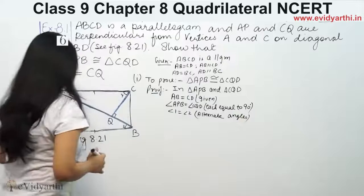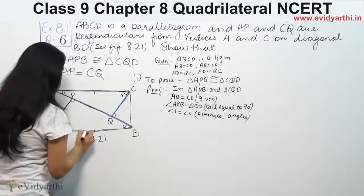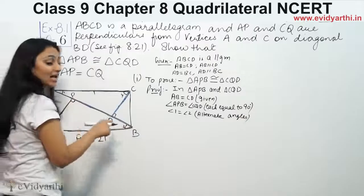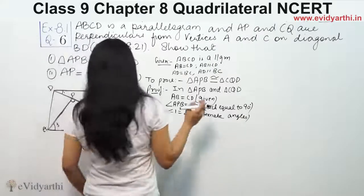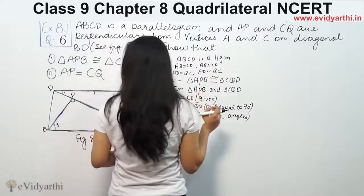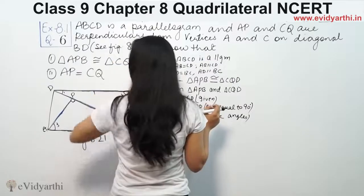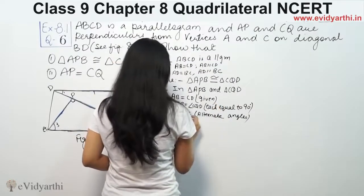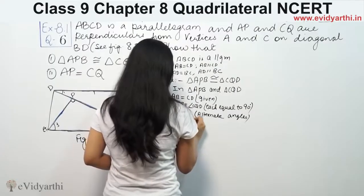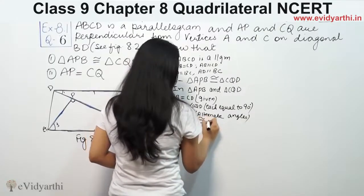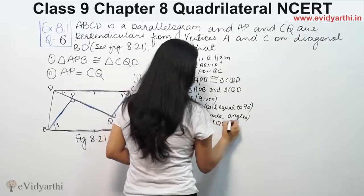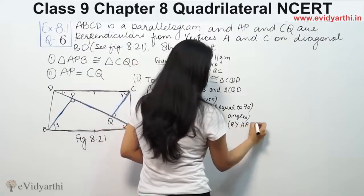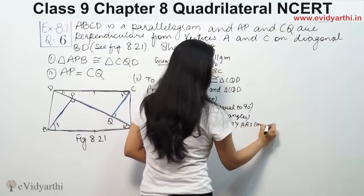So we have three angles and one side — angle, angle, side. Therefore triangle APB is congruent to triangle CQD by angle, angle, side congruency.